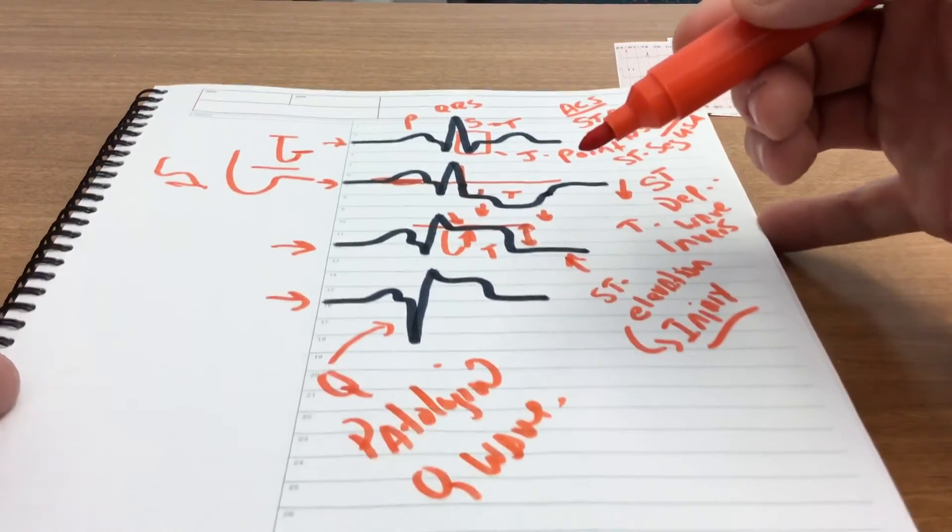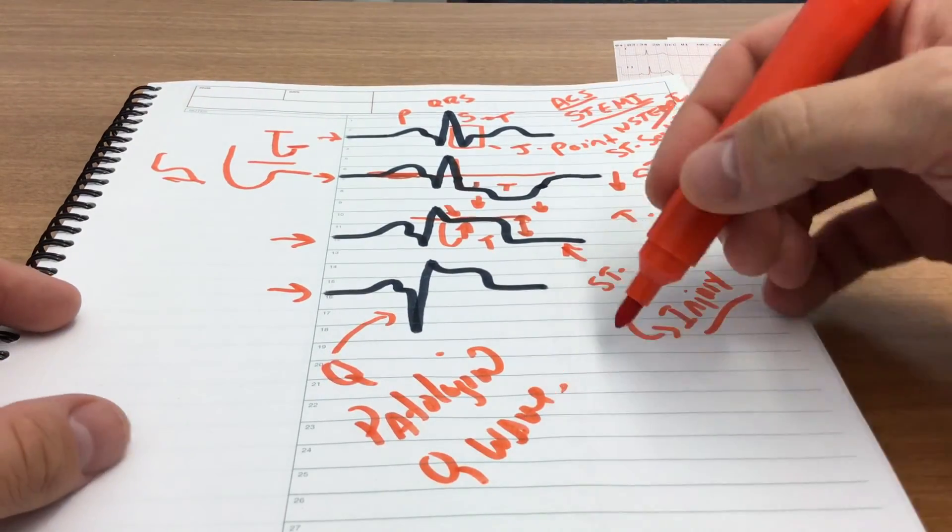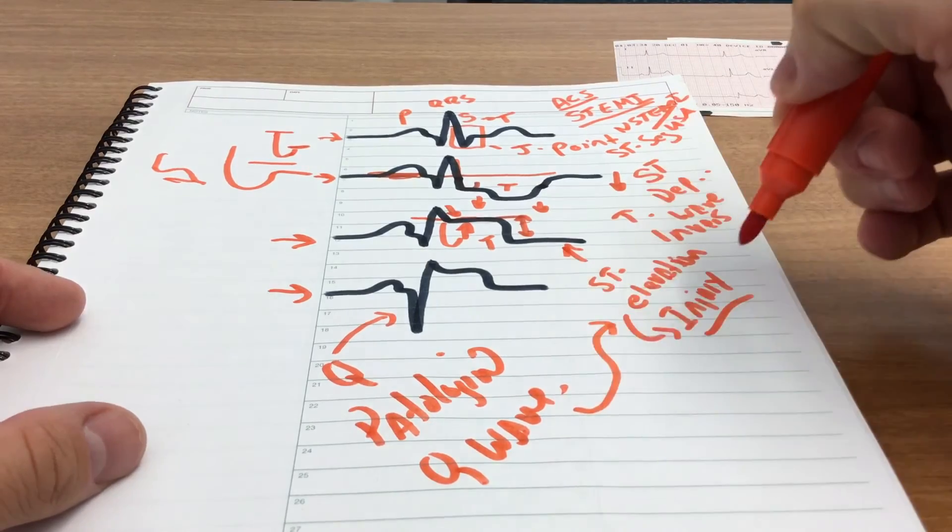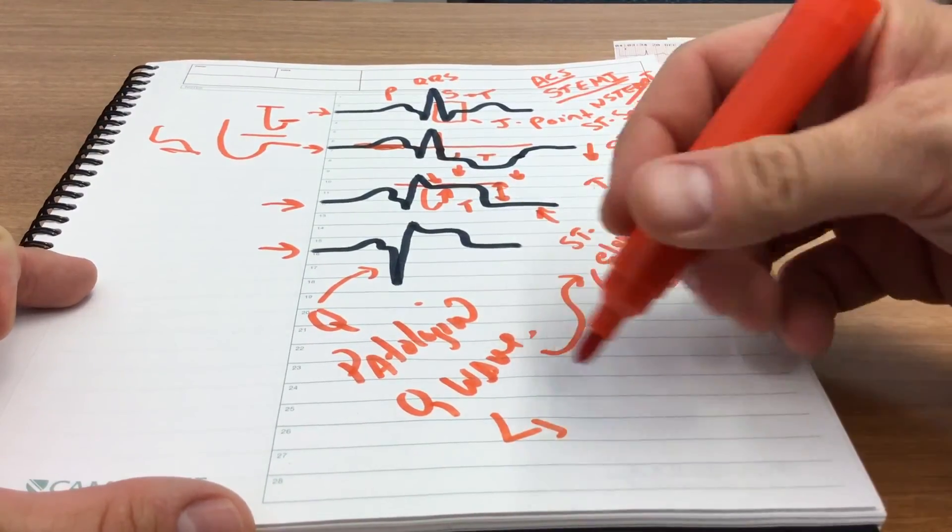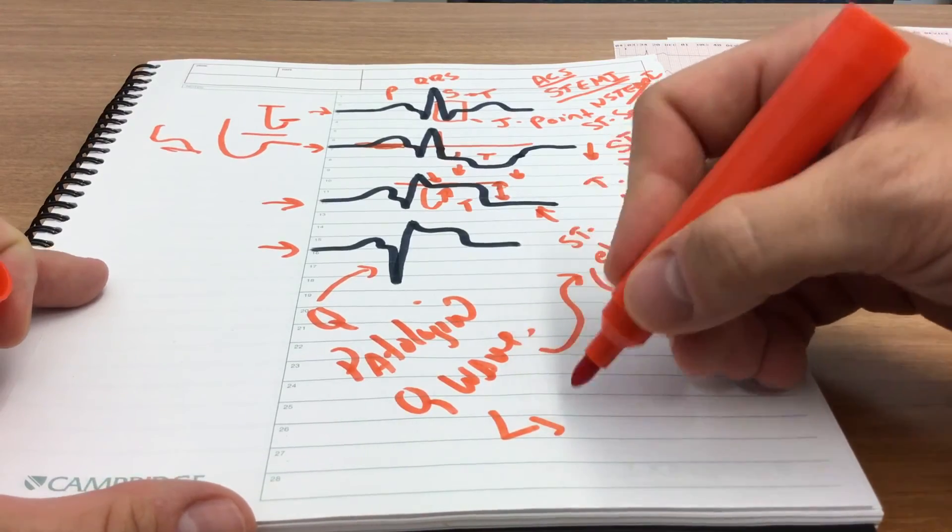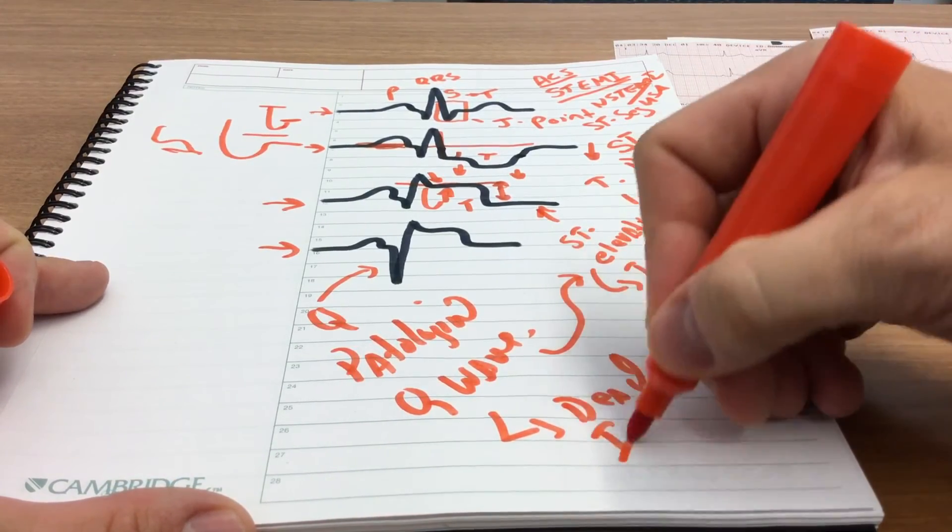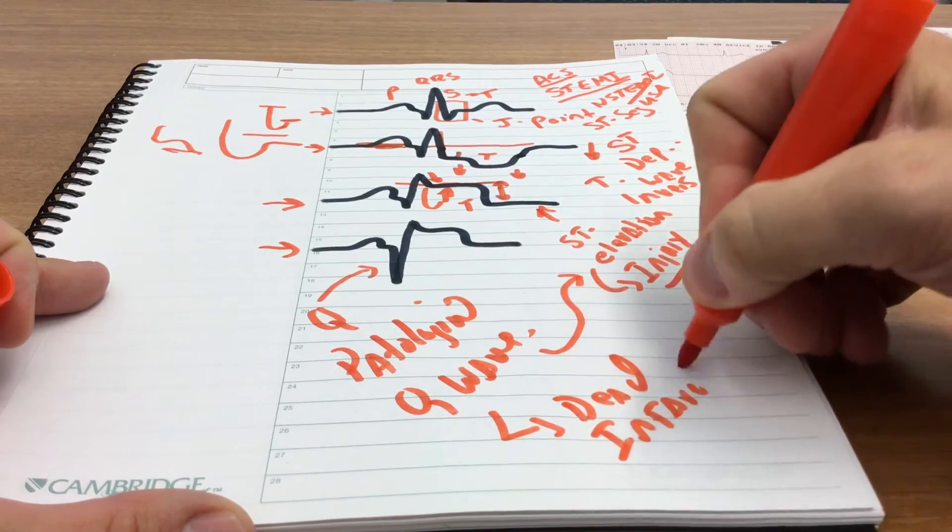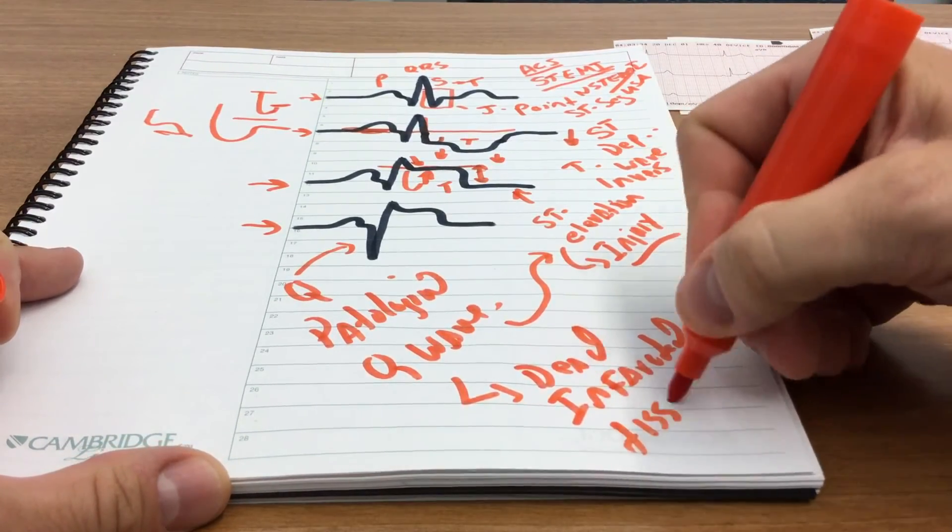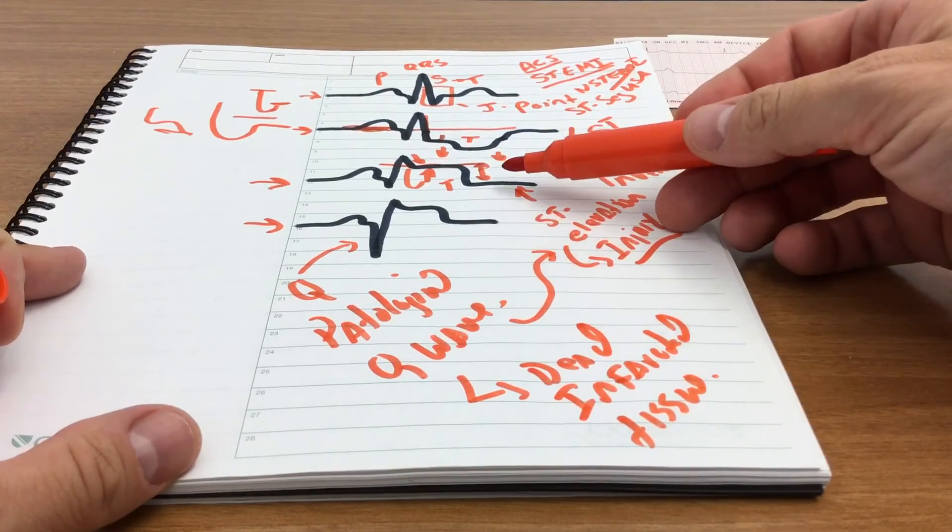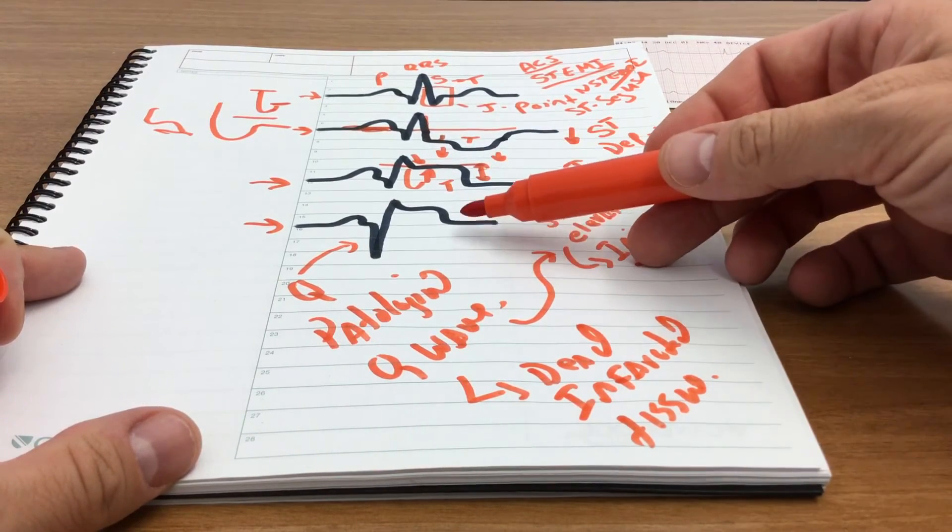So a pathological Q wave is often associated with the STEMI, but what pathological Q waves point to is they actually point to dead or infarcted tissue. So this is damaged, this is dying, and this is dead.